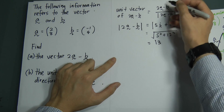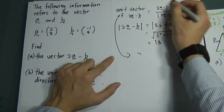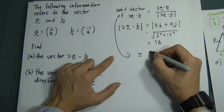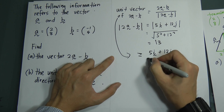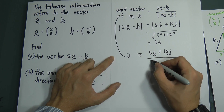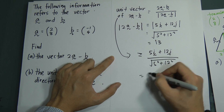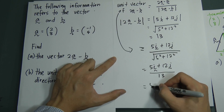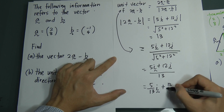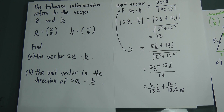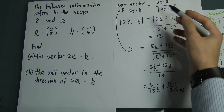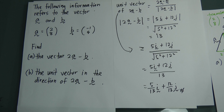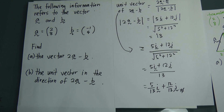Now substituting back: the unit vector equals (5i + 12j) divided by 13, which simplifies to (5/13)i + (12/13)j. The formula for unit vector is given in the formula list, but you need to understand how to apply it. That completes question one.